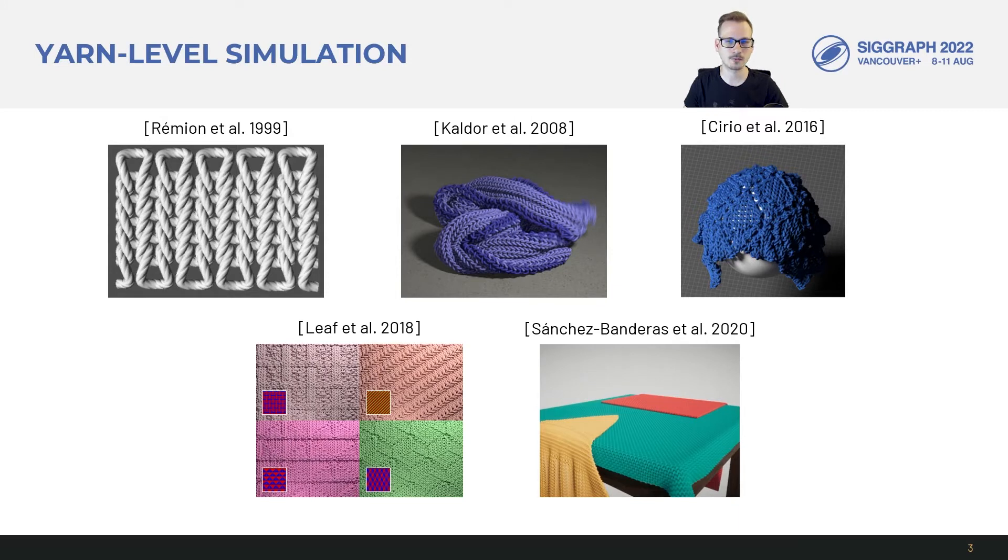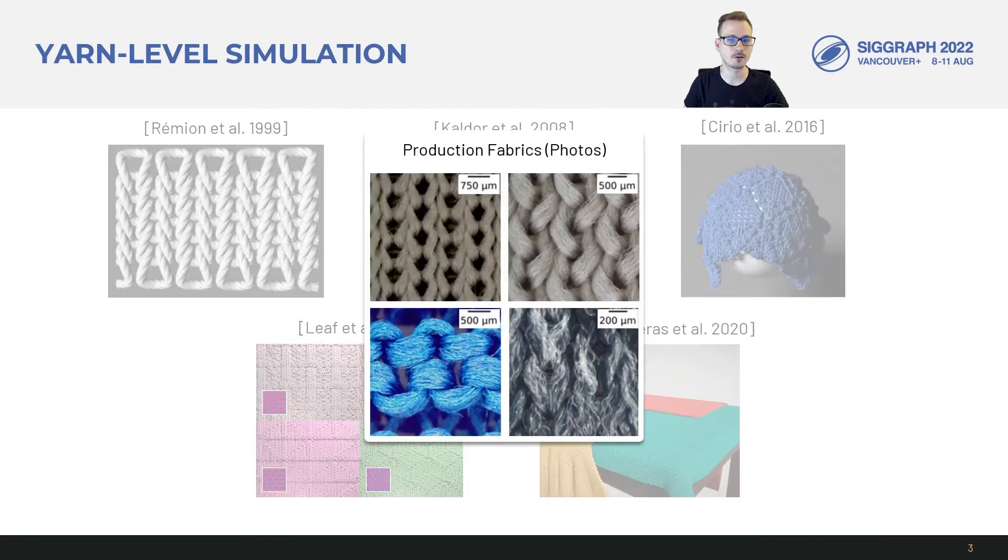Leaf et al. used fast periodic yarn simulation for interactive design of woven and knitted patterns. While these works prove that yarn simulation can match the qualitative behavior of real fabric, could these elastic yarn models we've been using also capture the complexity found in real production fabrics used in the textile industry?